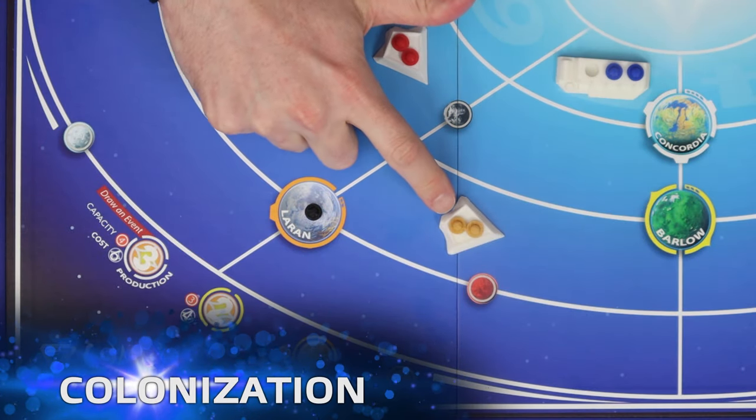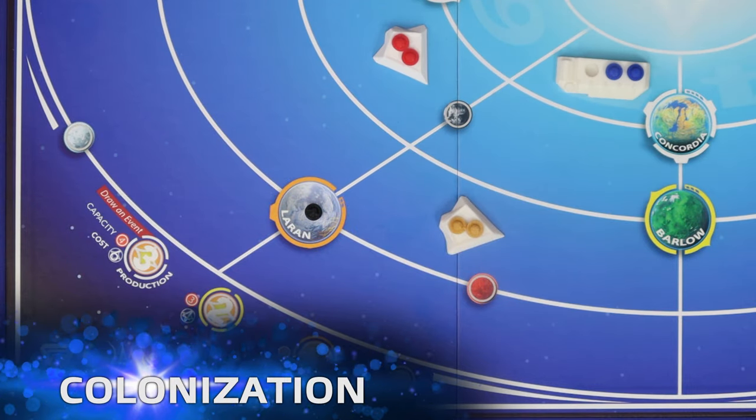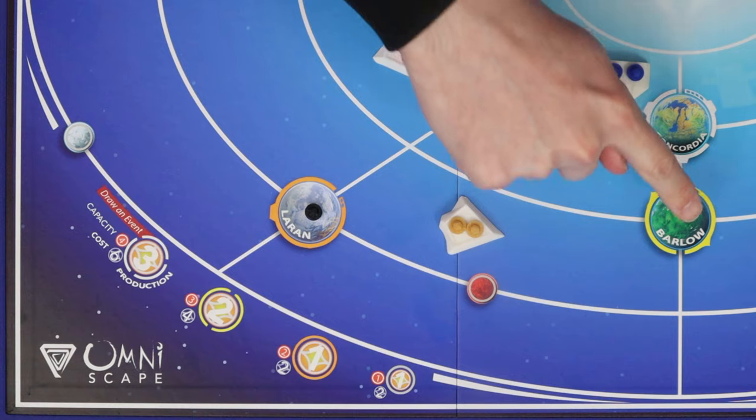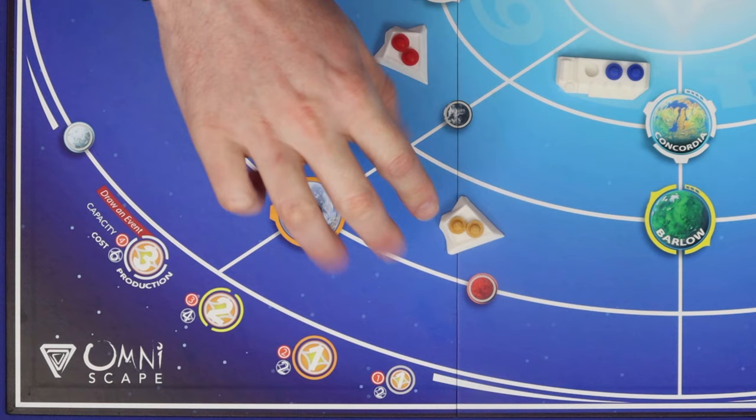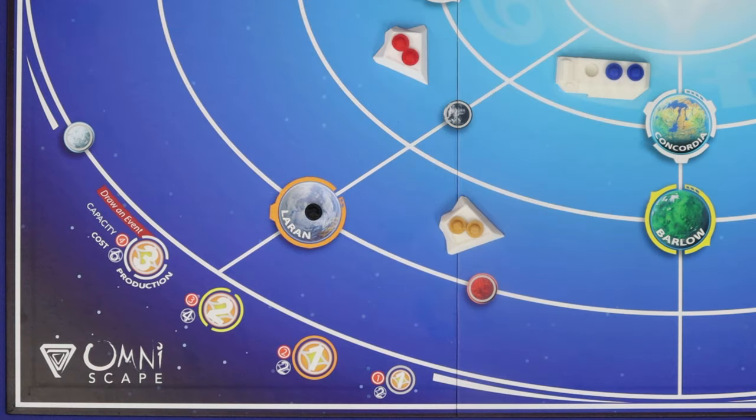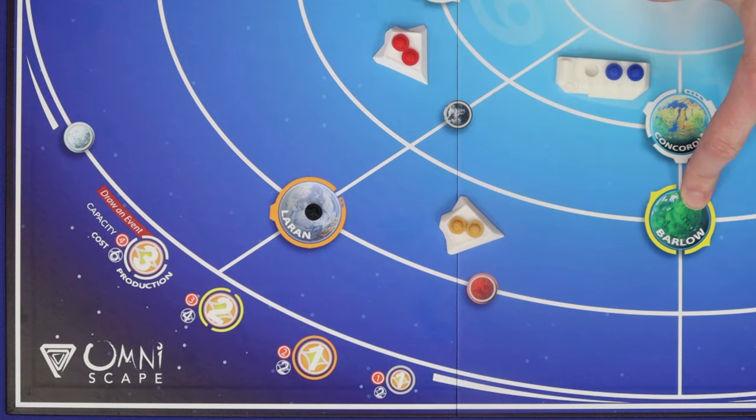The next action is colonize, and this is how you get your first colony onto an empty planet or moon on the board. To colonize, you must have a ship with at least one colony on it which is in orbit around an empty planet or moon. To be in orbit, you must be in one of the two or four quadrants which surround the planet or moon. So based on what you can see on the board right now, blue could colonize only Concordia, gold could colonize this moon or Barlow, and red could colonize this moon.